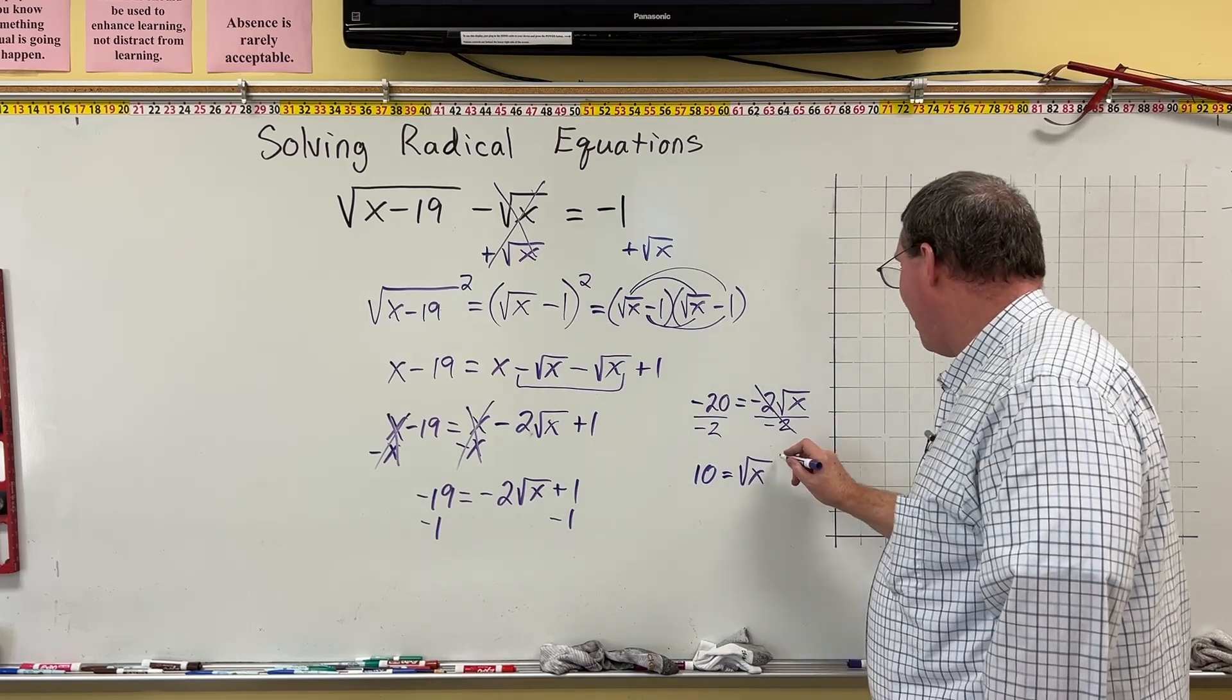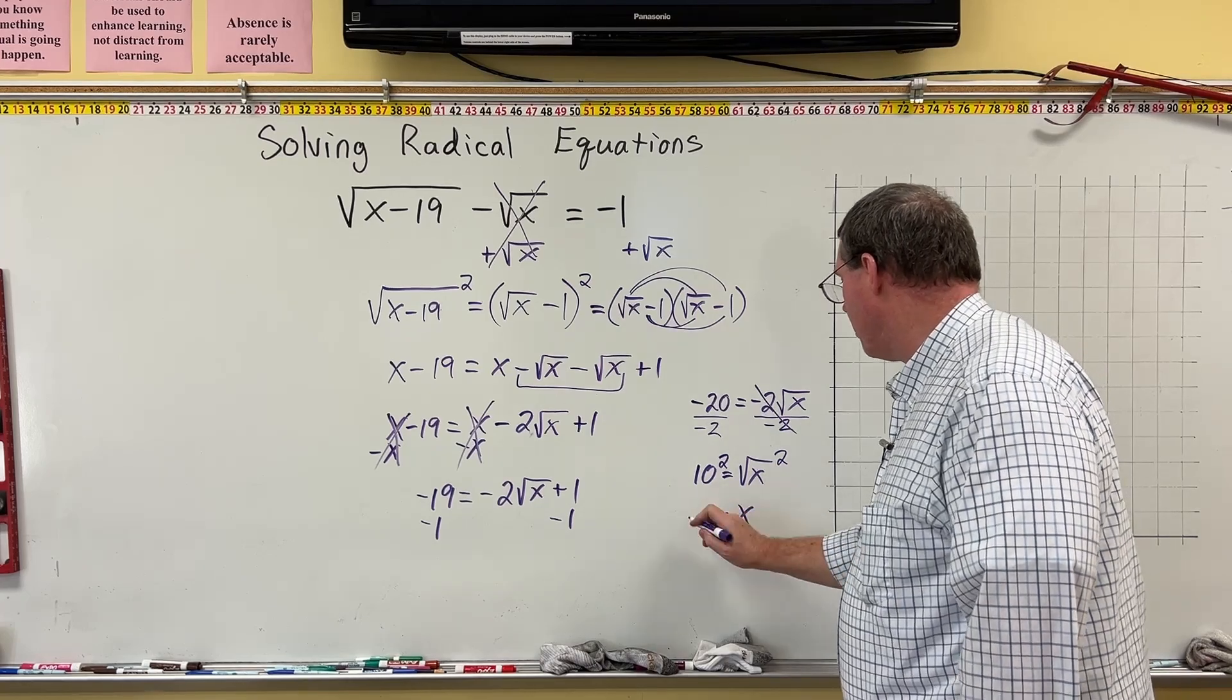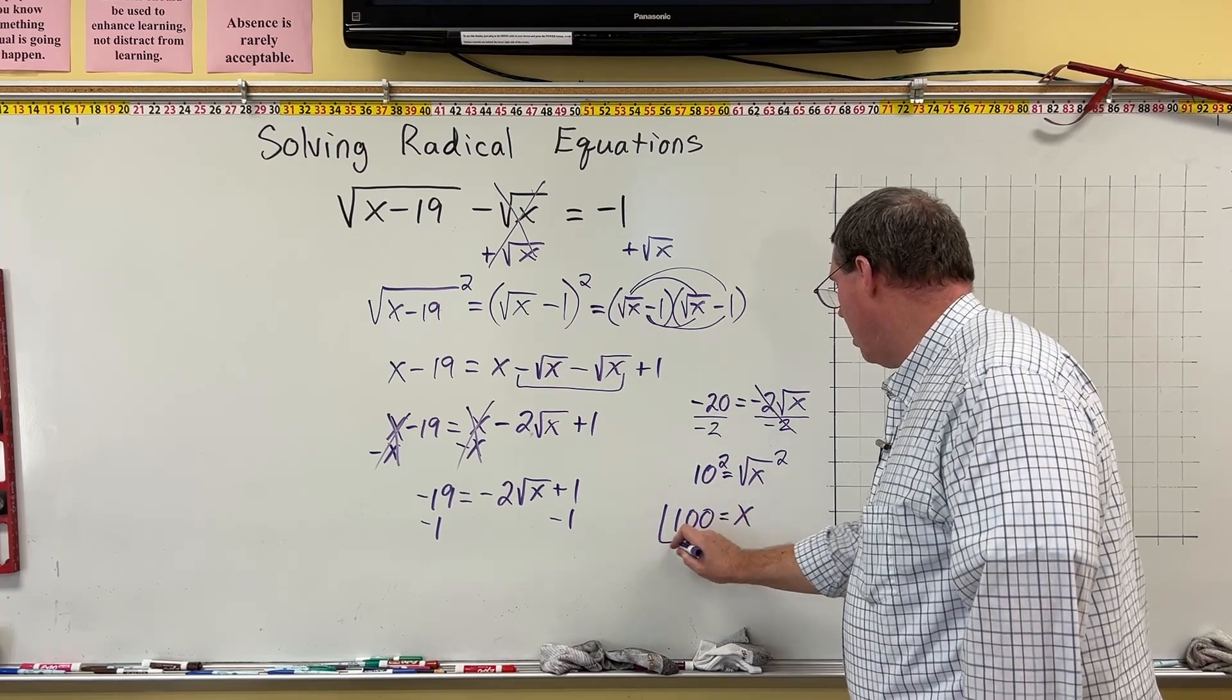And now if I square here and square here, I wind up with x is equal to 10 squared, which is 100.